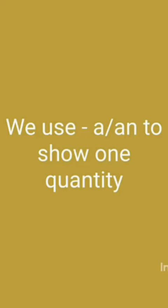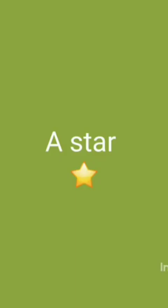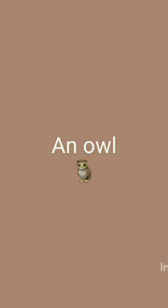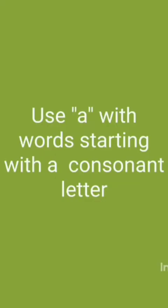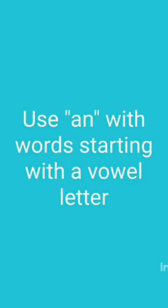We use 'a' or 'an' depending on the first letter of the word to show one quantity. For example, 'a star' — we have used 'a' here because 's' is a consonant. Another example: 'an owl' — we have used 'an' here because 'o' is a vowel. So words starting with a consonant letter take 'a', and words starting with a vowel letter generally take 'an'. There are exceptions to this that we will discuss later.